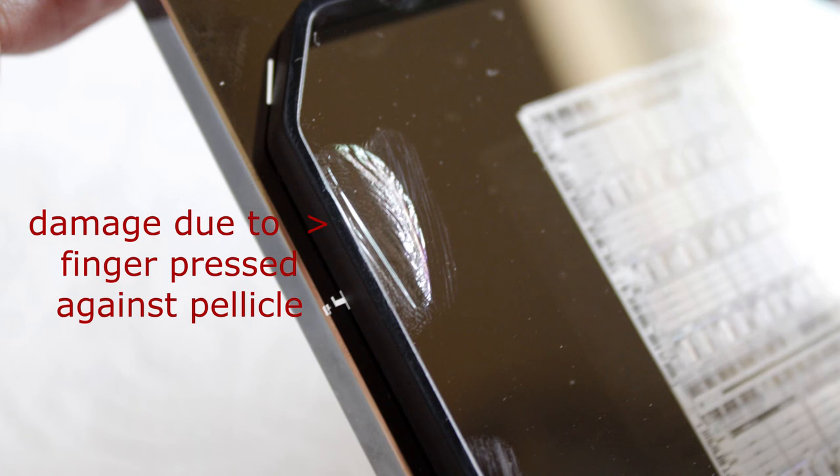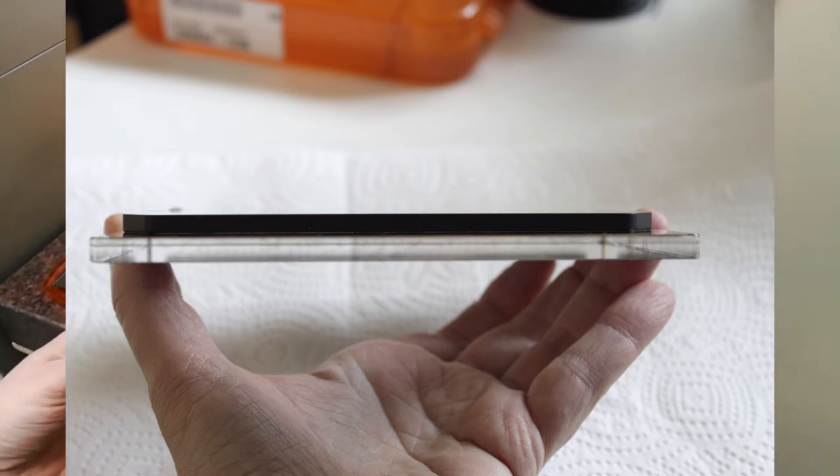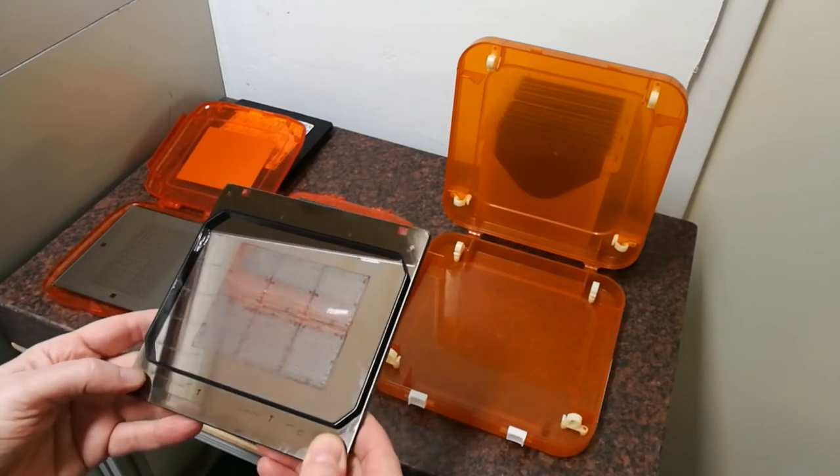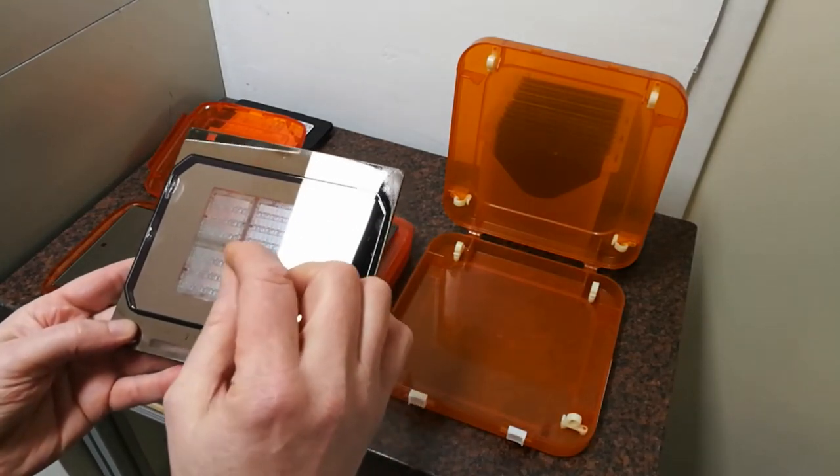Now a pellicle is actually just a very thin layer of very thin foil, which is away from the actual pattern surface or the mask surface. And the reason why they do this is actually to keep particles away from the mask pattern.